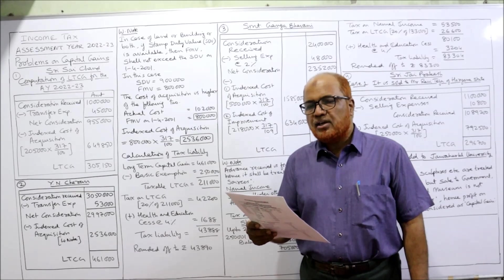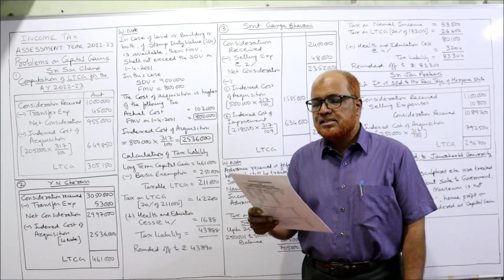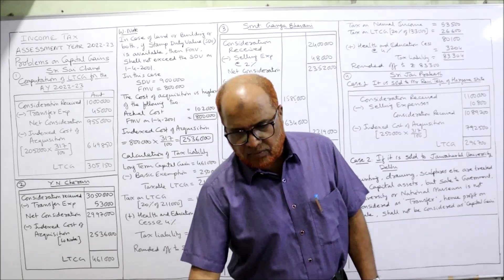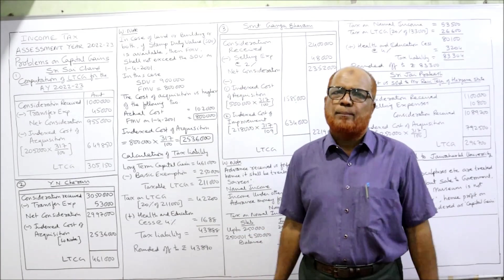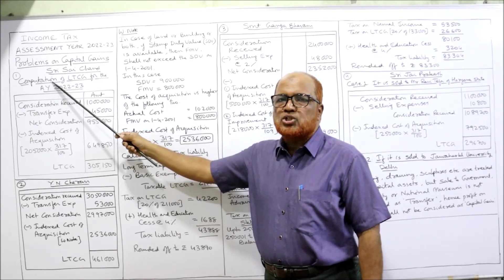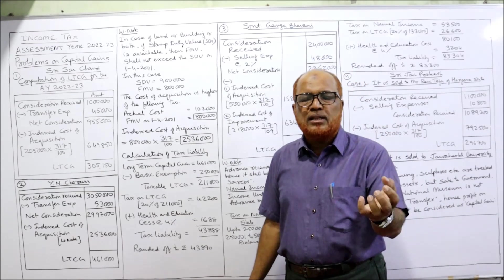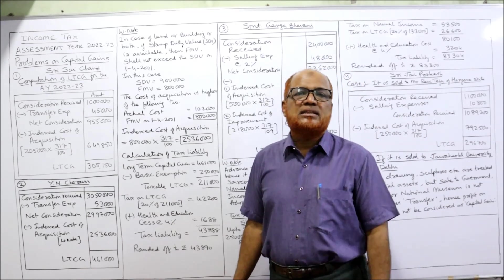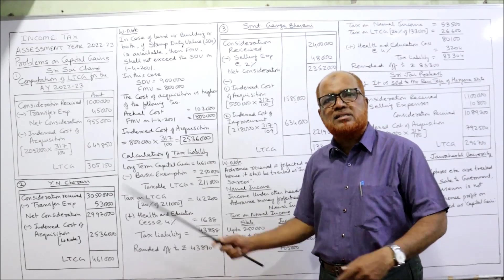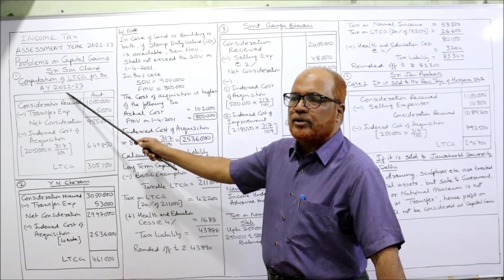The very first problem is very simple. So how to start the problem? First, write 'Sri Sai Chand — Computation of LTCG (Long-Term Capital Gain),' because SSC holds the asset for more than three years. After purchasing for more than three years, he is selling the asset. So it is long-term. Computation of long-term capital gain for the assessment year 22-23.